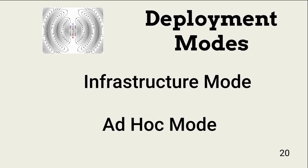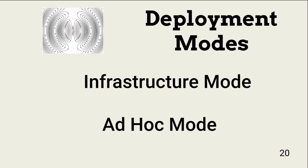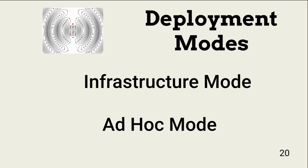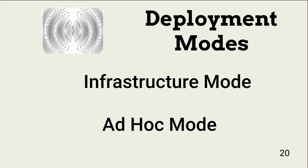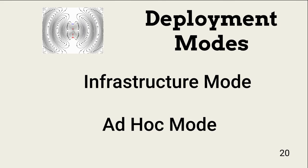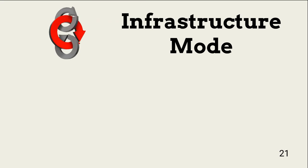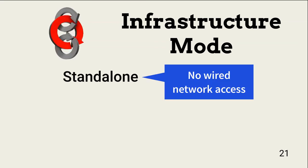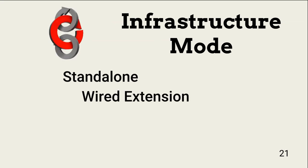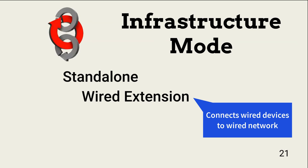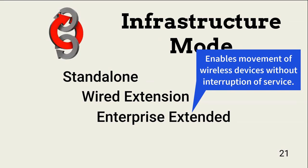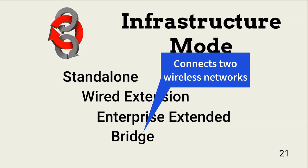Access points can be deployed in two ways: infrastructure mode and ad hoc mode. Infrastructure mode is the best choice when using centralized management and control of access points. Ad hoc mode allows connection of wireless devices without centralized control and without any authentication. There are four types of infrastructure modes: standalone mode, where the access point connects wireless devices to each other but not to wired resources; wired extension, which links wireless devices to the wired network; Enterprise Extended or ESSID, which enables device movement across a large area without interruption of wireless service; and Bridge, which links two wireless networks, often used between floors or buildings.